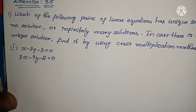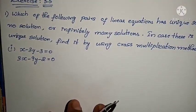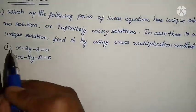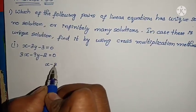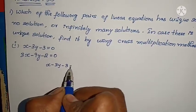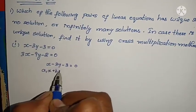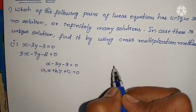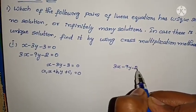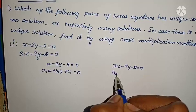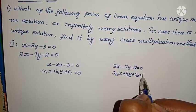We have already seen these same problems in Exercise 3.1 and 3.2. Let us recall those problems. See here, the first given equations — two equations are given. First: x minus 3y minus 3 equals to 0, which is in the model of A1x plus B1y plus C1 equals to 0. Second equation: 3x minus 9y minus 2 equals to 0, in the form of A2x plus B2y plus C2 equals to 0.